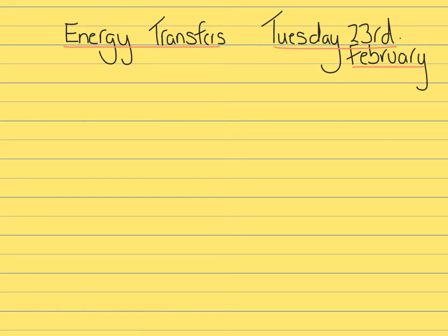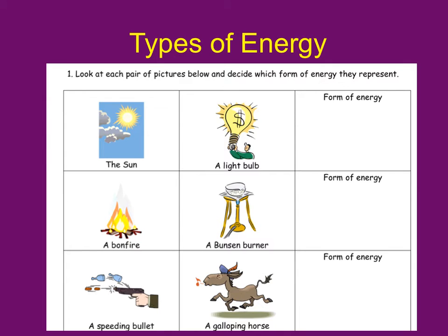Now if we're going to talk about Energy Transfers, we need to remember that there are nine types of energy. We covered these before half term, but we're going to start the lesson by revising these. Attached to today's work you've got a worksheet — you'll need to print it off, or if you haven't got a printer, you can try to draw the pictures. Work a step ahead of me and pause the video as you need to. We're going to work through the first three together, then you can pause and finish off the worksheet. Look at each pair of pictures and decide which form of energy they represent — think of the nine we covered on the 4th of February, and if you need to, page back in your exercise books.